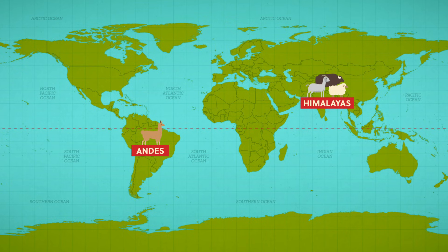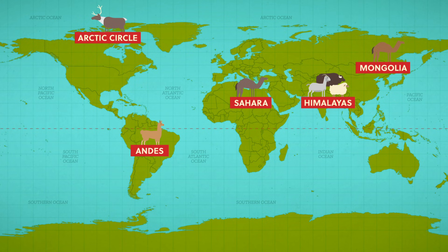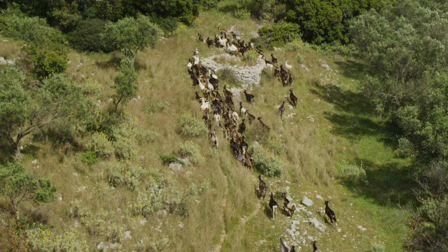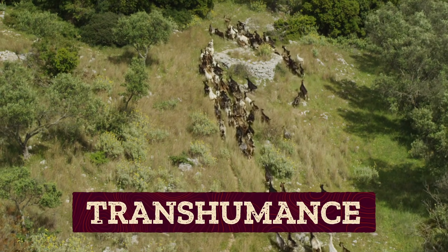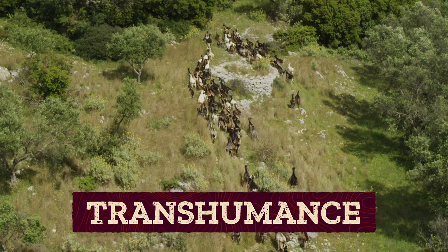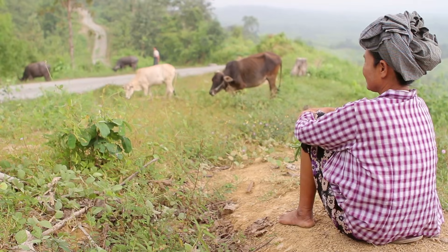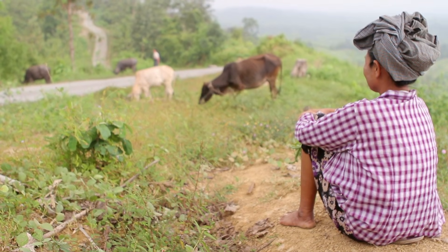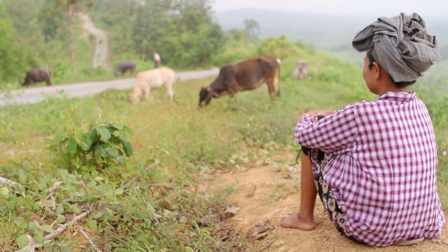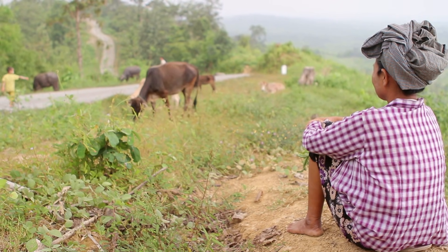For thousands of years, we've raised animals like llamas in the Andes, yaks, goats, and sheep in the Himalayas, reindeer in the Arctic Circle, and camels in Mongolia and in the Sahara. And humans met those animal husbandry requirements through transhumance, or moving herds between pastures with the change of seasons to help ecosystems stay productive. Indigenous communities especially have farmed in ways that have left plenty of energy for local ecosystems.